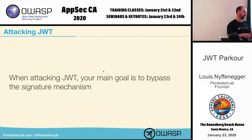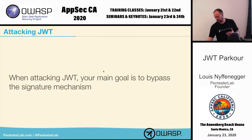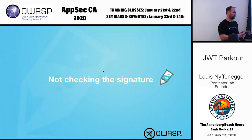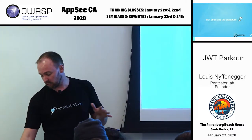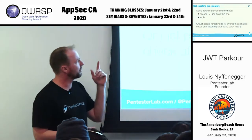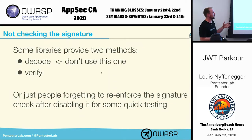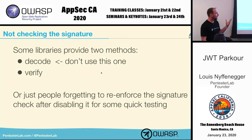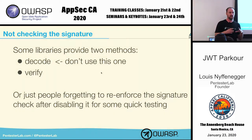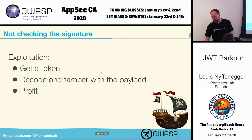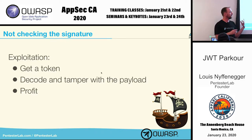Most of the time when attacking JWT, your goal is to bypass the signature mechanism and tamper with the token. One of the bugs you can find — if you're really lucky — is that people are not checking the signature at all. In JavaScript, there's a library with two methods: decode and verify. You don't want to use decode because it doesn't verify. People disable the signature check for debugging and forget to put it back. If that happens, you just get a token, tamper with it, and send it back — changing your username from 'test' to 'admin.'